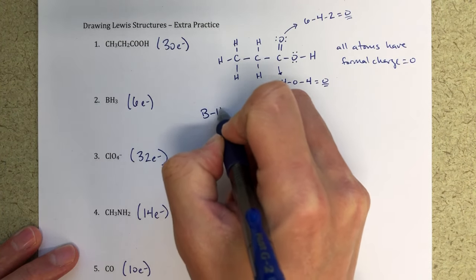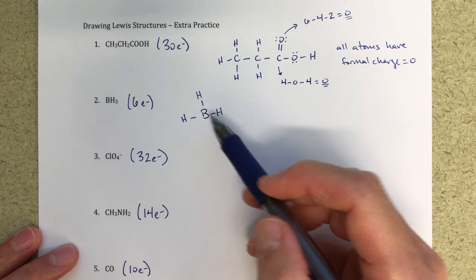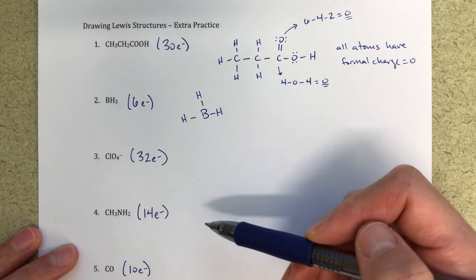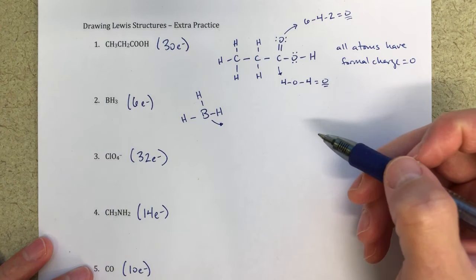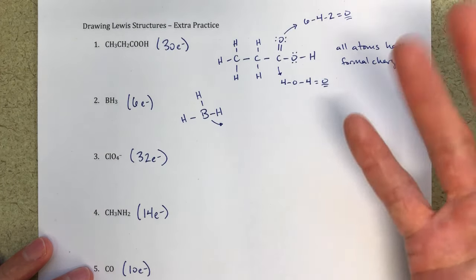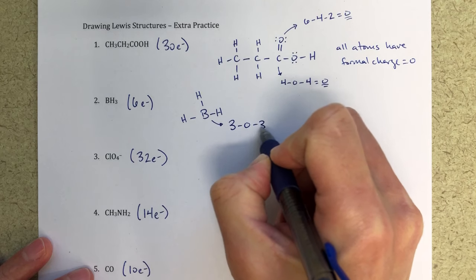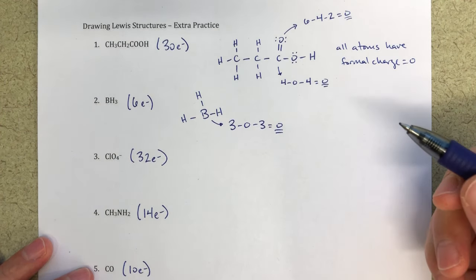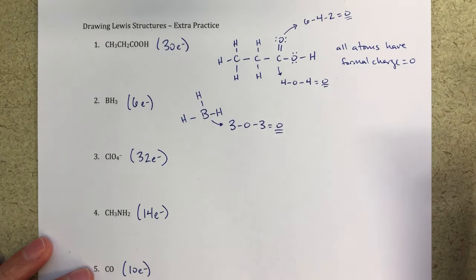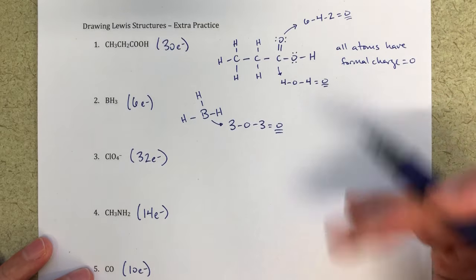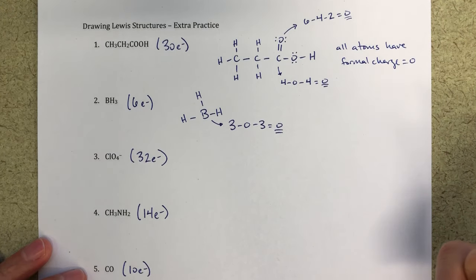BH3: starting with the skeleton structure, I've only got six electrons — two in each bond — so I place the three hydrogens around boron and that's it. Boron is not following the octet rule, and that's okay. Small atoms like boron and hydrogen can have less than a full octet. Carbon, nitrogen, oxygen, and fluorine are really never going to break the octet rule. The formal charge for boron: three minus zero minus three equals zero, so breaking the octet rule is acceptable here.